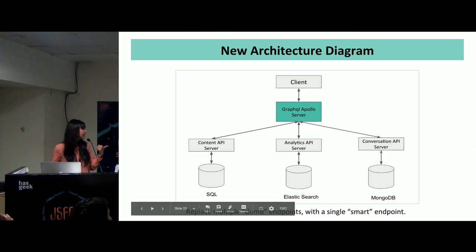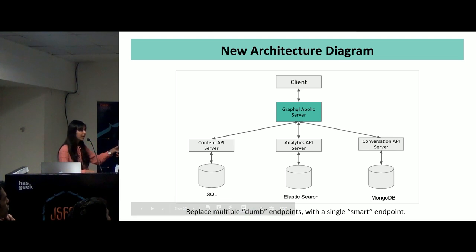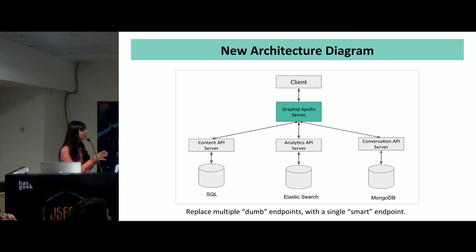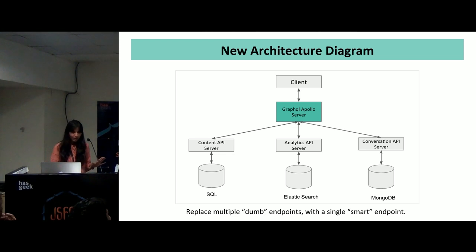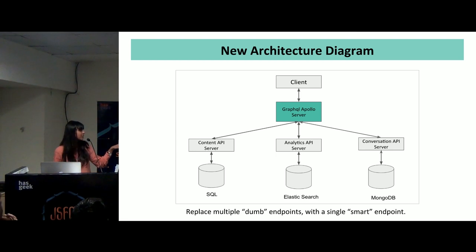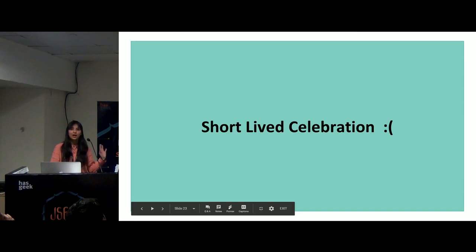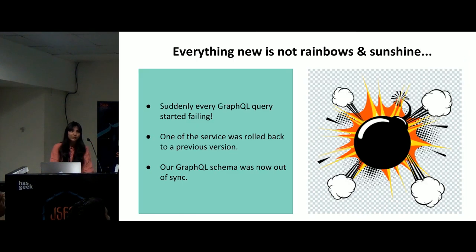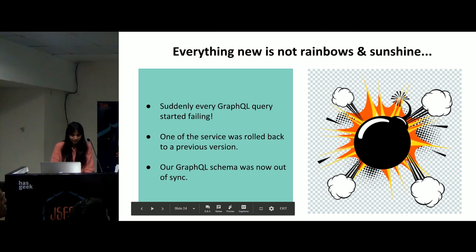So our new architecture diagram looks something like this. Instead of the client talking to three different APIs, the client just talks to the GraphQL Apollo server, asks what it needs, and the Apollo server handles the complexity of talking to those three different APIs. So at that time we were quite happy — we had solved the problem — but little did we know it was a short-lived celebration.